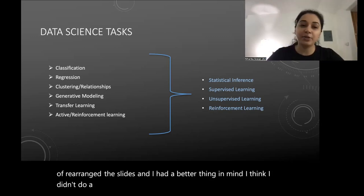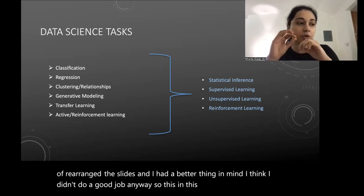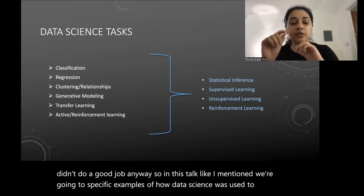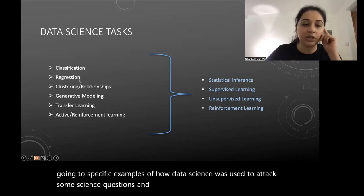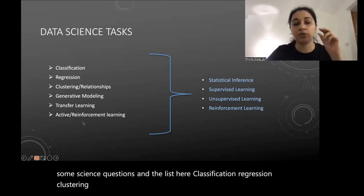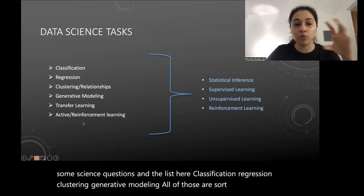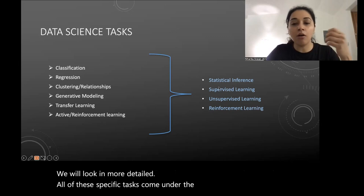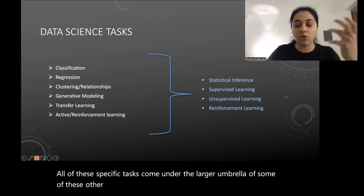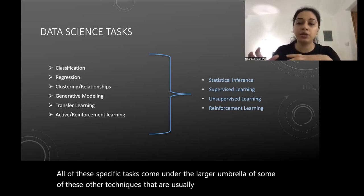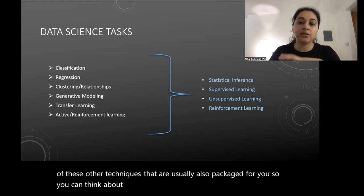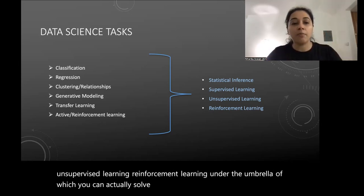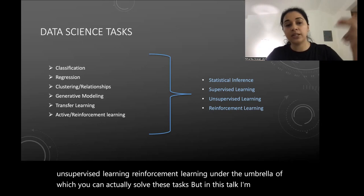In this talk, we're going through specific examples of how data science was used to attack science questions. The list includes classification, regression, clustering, and generative modeling — all examples we will look at in more detail. These specific tasks come under the larger umbrella of statistical inference, supervised learning, unsupervised learning, and reinforcement learning, under which you can solve these tasks.